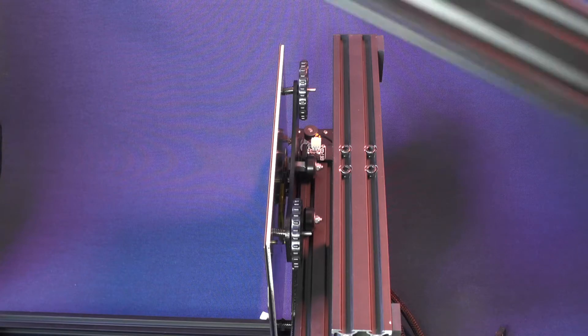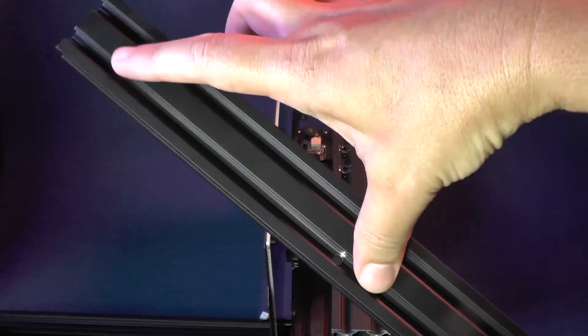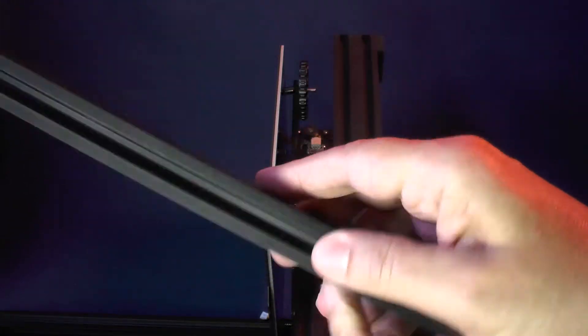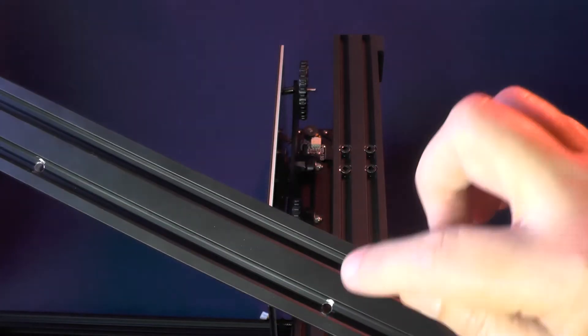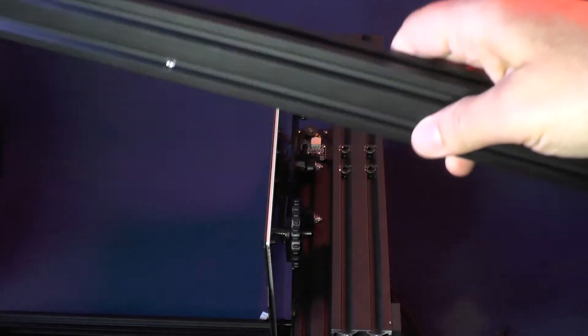Now for the other 2040 aluminum extrusion, the side where the hole is closer to the end is the one that will be attached to the base of the printer. And as you can see here, one side of those little holes is wider than the other. And the side where the holes are wider should be facing the front of the printer.